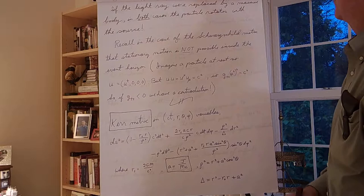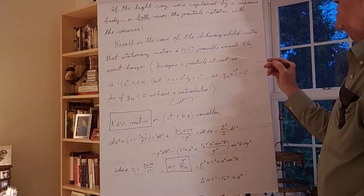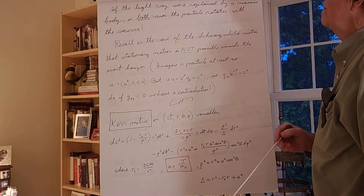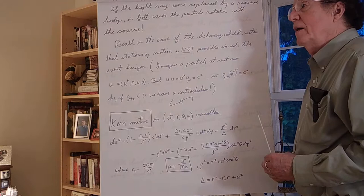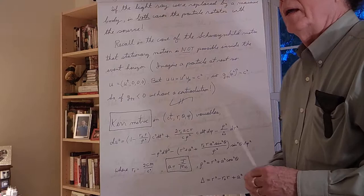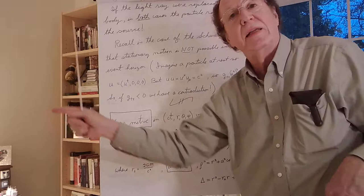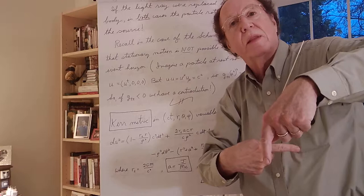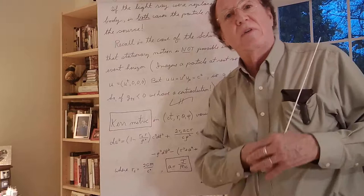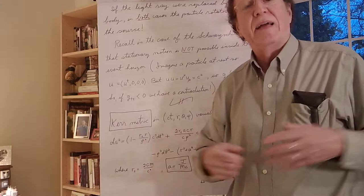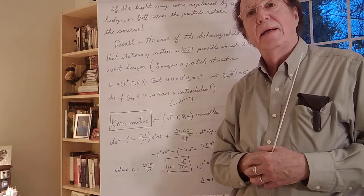This reminds us of phenomena we found with the Schwarzschild metric: inside the event horizon, stationary motion is not possible. Similarly here for a rotating star, if you replace the light ray with a massive particle, the particle shot in the direction of rotation gets an enhanced d phi/dt, while one shot backward can't keep up with the light ray that was stopped. So a massive particle on the surface of infinite redshift must also always rotate with the rotating star — it is impossible for it to stand still, no matter what you try.